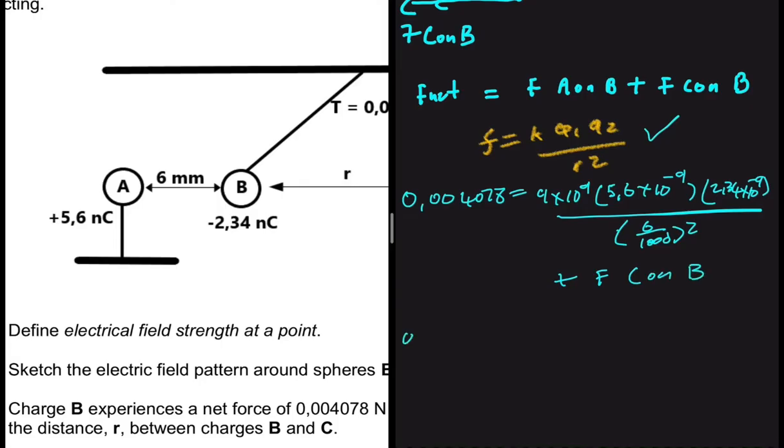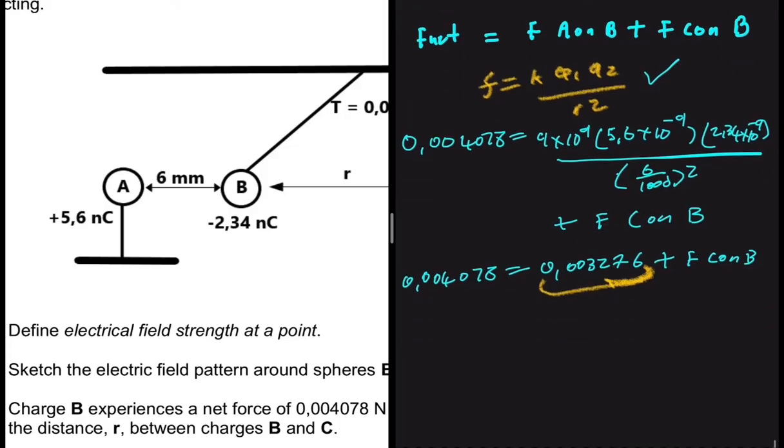And then plus F C on B. So we're going to have 0.004078 equals... when you put that in your calculator, you should get 0.003276 plus F C on B.